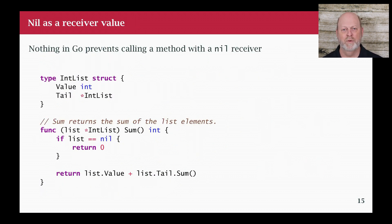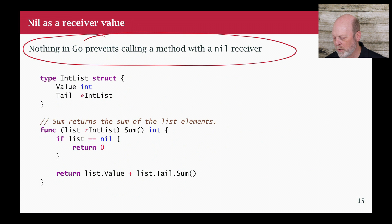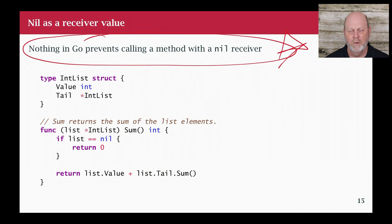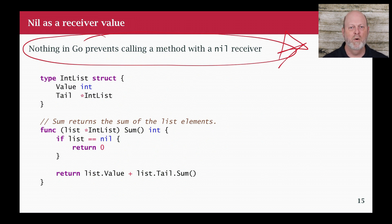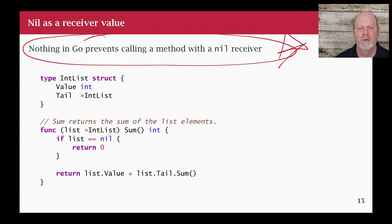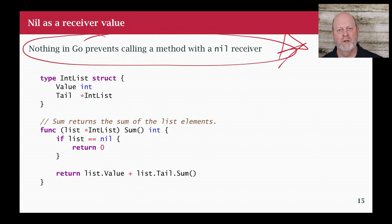There's another aspect of making nil useful. Nothing prevents you from calling a method with a nil receiver. Most languages — if you have some variable that represents an object and it's nil and you try to call a method on that nil pointer, you die or throw an exception. But that's not true in Go. We can have a nil receiver and call a method on it, and it's up to you how that gets handled.